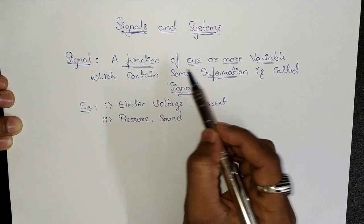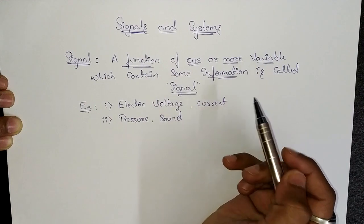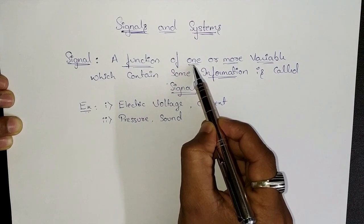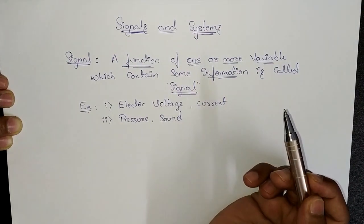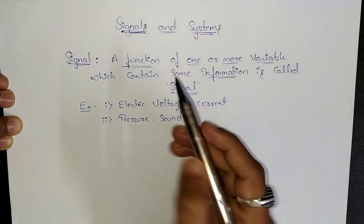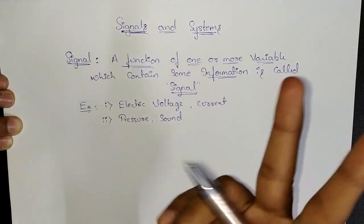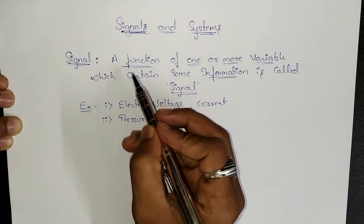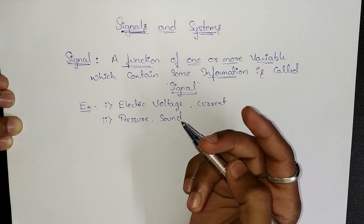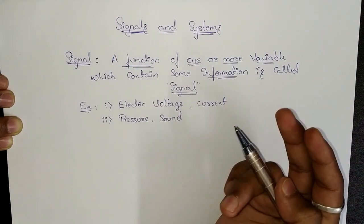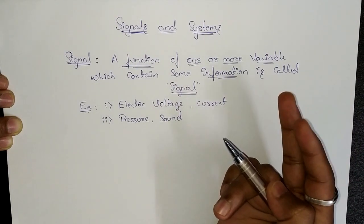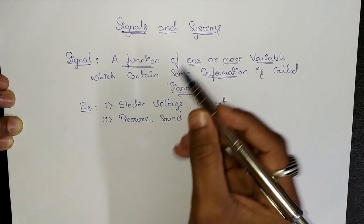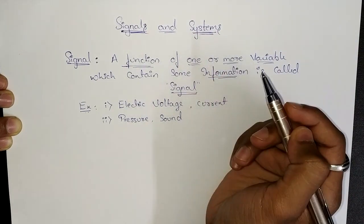If the function consists of only one variable, it is a one-dimensional signal. If the function carries more than one or two variables, then we can call it a two-dimensional signal. If the function carries n number of variables, then we can say it is a multi-dimensional signal.